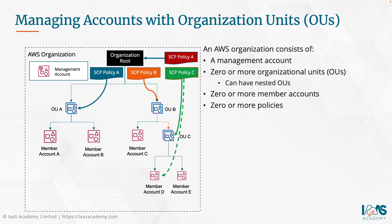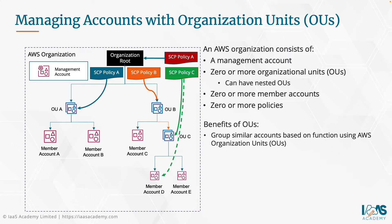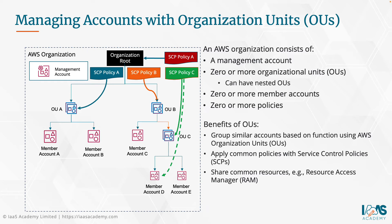Using organization units comes with a vast array of benefits. Firstly, you're able to group accounts based on function using AWS organization units - you can have OUs hosting your development accounts, another hosting production accounts, some hosting sandbox environments, others hosting application workloads, etc. You can therefore apply common policies with service control policies, SCPs. You can also share common resources - OUs enable you to organize your accounts so that you can easily share centrally managed resources across similar accounts. The AWS Resource Access Manager, RAM, enables you to use OUs as a basis for sharing centrally managed resources, for example transit gateways, subnets, AWS License Manager configurations, and Route 53 resolver rules.